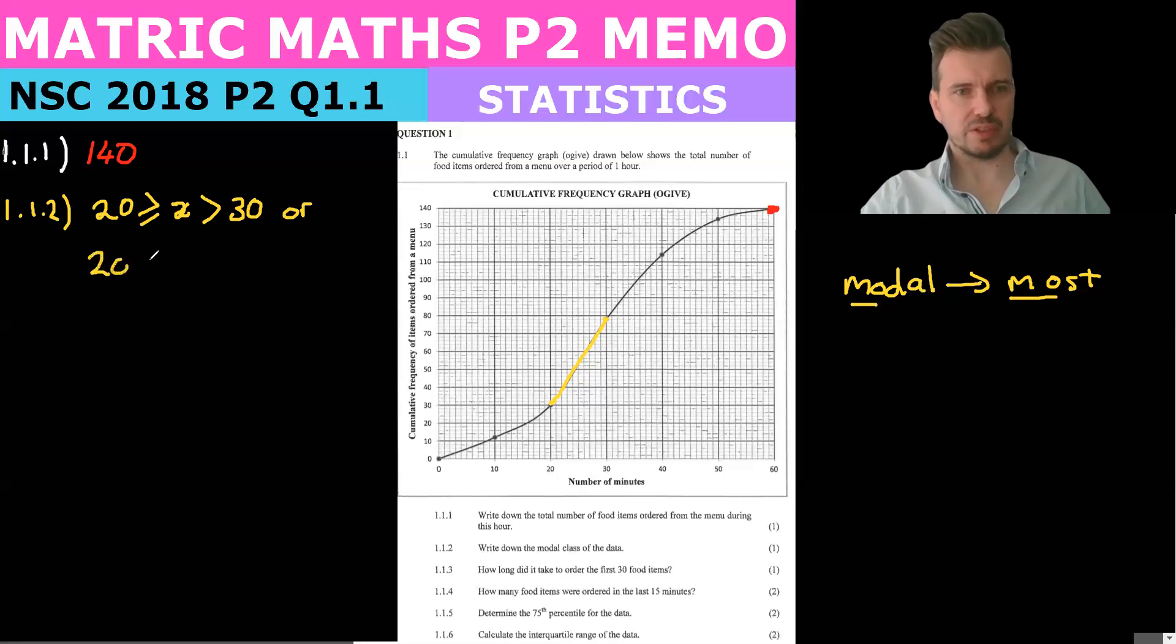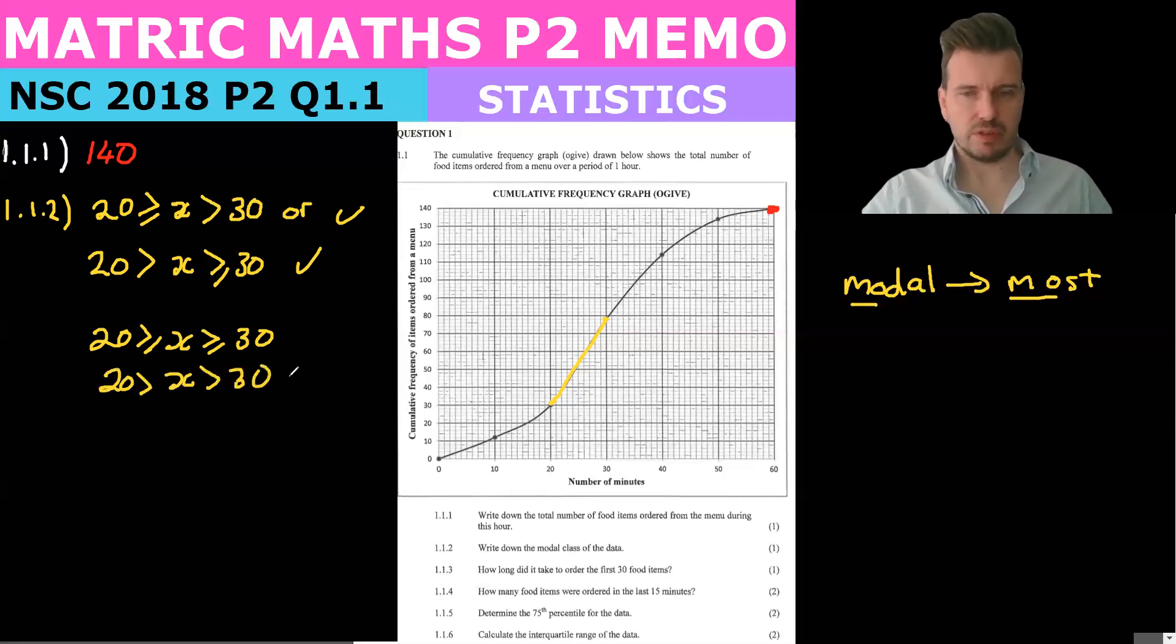They will also accept if you do it the other way around, so you could do x is greater than 20 or less than and equal to 30. But this is right and this is right, but you can't do this, so this is wrong, and you also can't do this, so these are wrong.